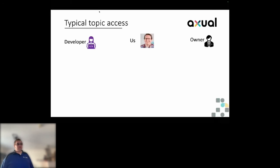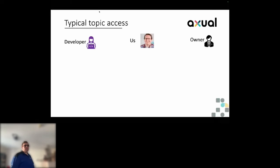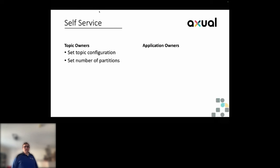The answer to surviving this in an enterprise is simple: delegate and reassign responsibilities. I don't want to be a bottleneck for others — everything they can do themselves, they should do. So we decided on a self-service approach with two groups: topic owners and application owners. Topic owners define topics, sizing, and approve access; they decide on schema definitions. Application owners register applications and credentials, and request access to topics. This means I'm no longer in the middle.